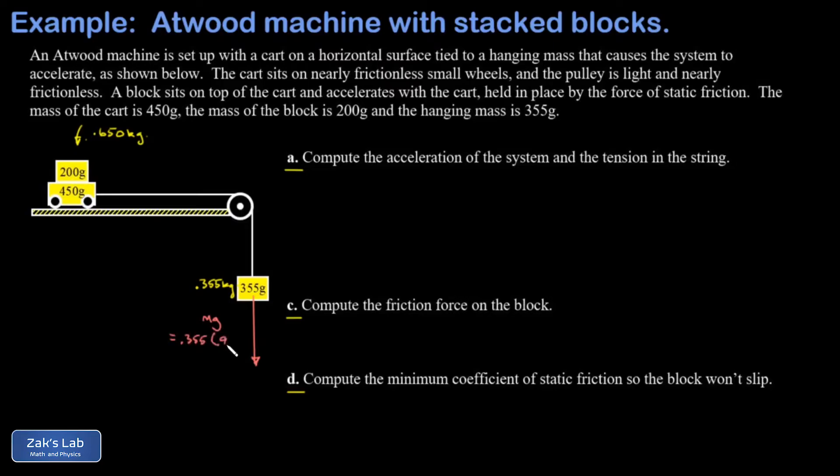I crunch the numbers real quick because I have plenty of room in my diagram, 0.355 times 9.8. And this gives me 3.479 newtons. The other force felt by that mass is the tension in the string pulling up, and I'm intentionally showing that vector shorter than the weight vector because I know the weight is bigger than the tension because I know that block is accelerating downward.